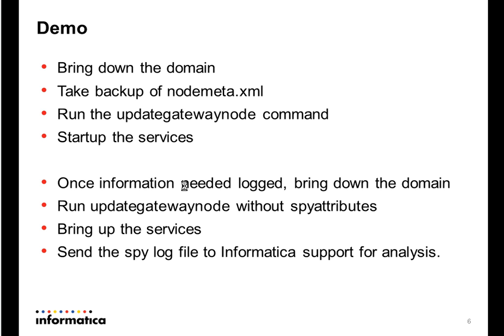Moving to the demo part — to summarize the steps: first, bring down the domain and take a backup of the node.meta.xml present in the INFA_HOME/isp/config folder. Then run the updateGatewayNode command as shown in the previous slide, and start the services after the command executes successfully. Once you have captured the information you wanted to trace in the spy log, run updateGatewayNode again without the spy attributes, bring up the services, and send the spy log to Informatica Support for analysis.